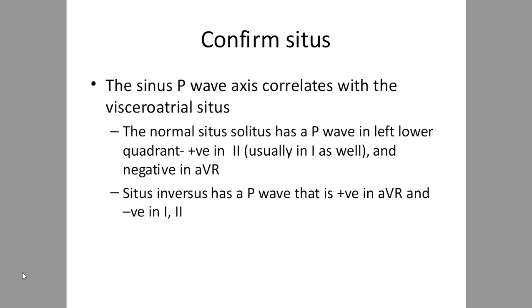First and foremost, once you get an ECG in congenital heart disease, confirm the situs, because only situs solitus permits useful interpretation of coexisting abnormalities. The sinus P-wave axis correlates to the visceroatrial situs. A normal situs shows a P-wave in the left lower quadrant — positive in lead II, usually in lead I, and negative in aVR. In situs inversus, the reverse is true: P-wave positive in aVR and negative in leads II and I.